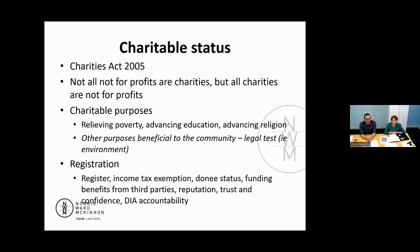Pleasingly, the environment forms a bigger and bigger part of other purposes beneficial to the community. The legal test covers five key requirements. First, being similar to another charitable purpose — almost fitting into poverty, education, or religion, but not quite. Second, that the benefit relates to the public or a section of the public. Third, that there's a benefit capable of being defined or identified.